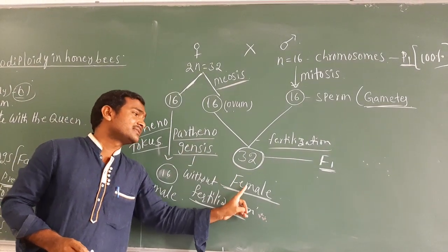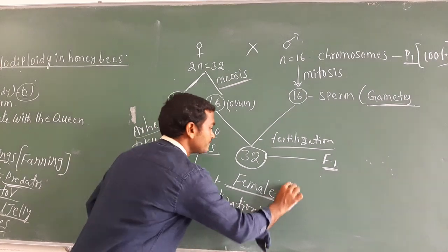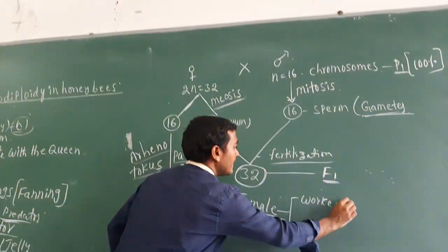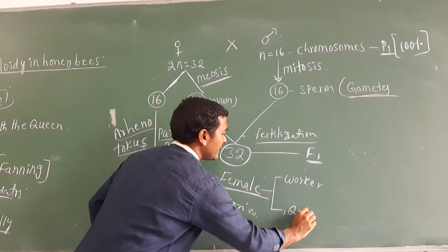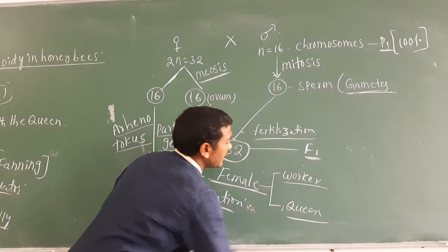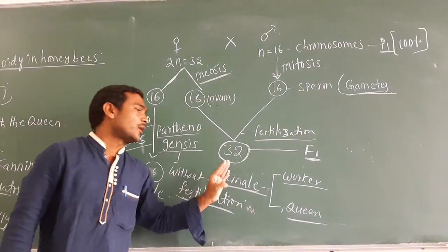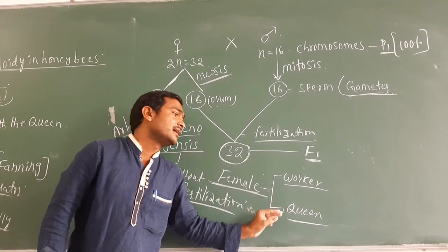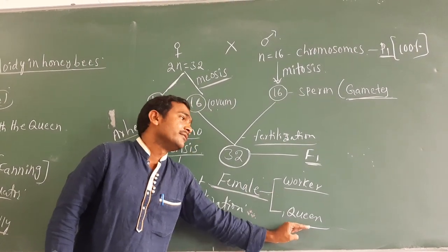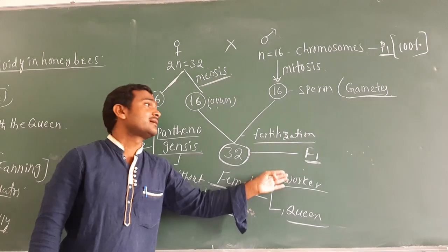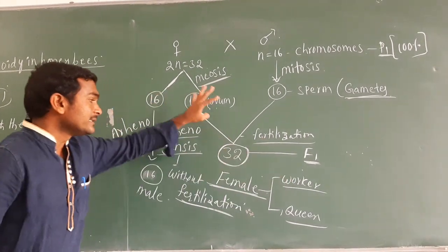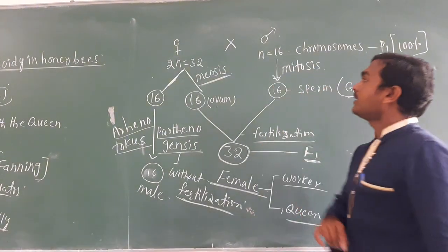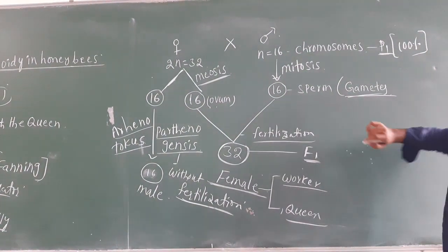The females produced by fertilization can be converted into either worker bees or queen bees, depending on the feeding of royal jelly. If fed royal jelly, the female becomes a queen honeybee; if not, it becomes a worker honeybee.